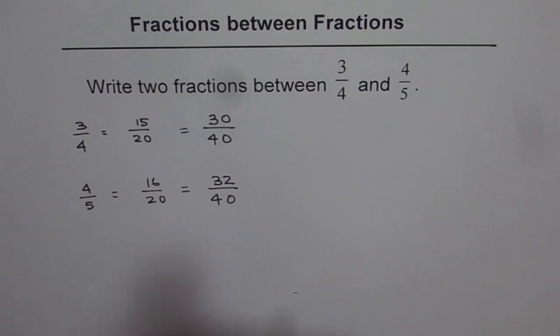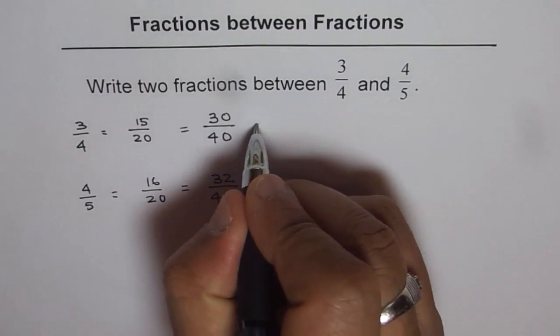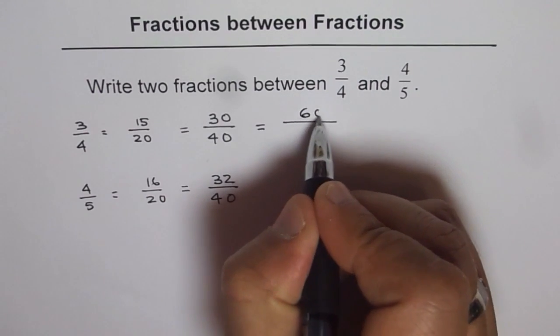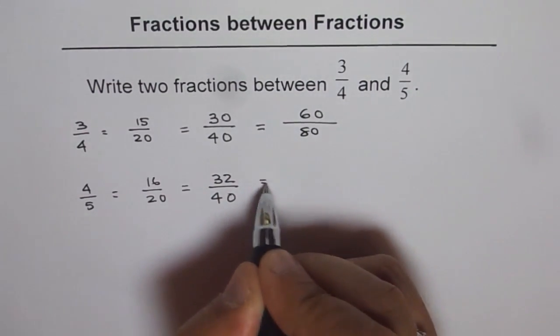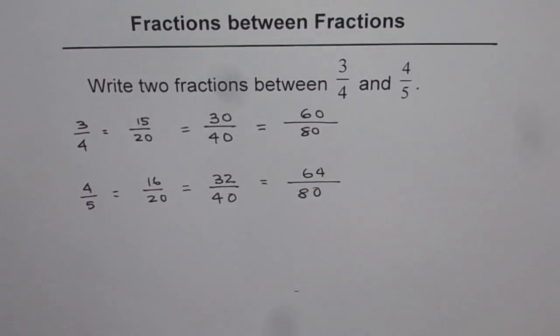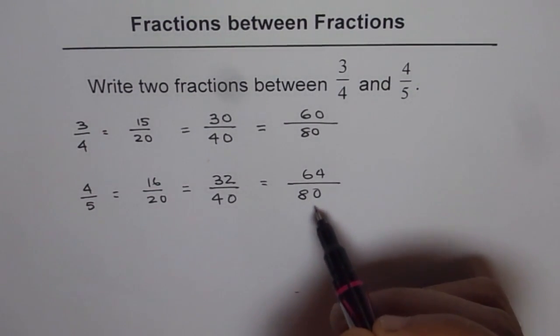We need two fractions. Let's multiply these by 2 again. What we get is 2 times 30 equals 60/80, and this is equivalent to 64/80. Now it's easy.